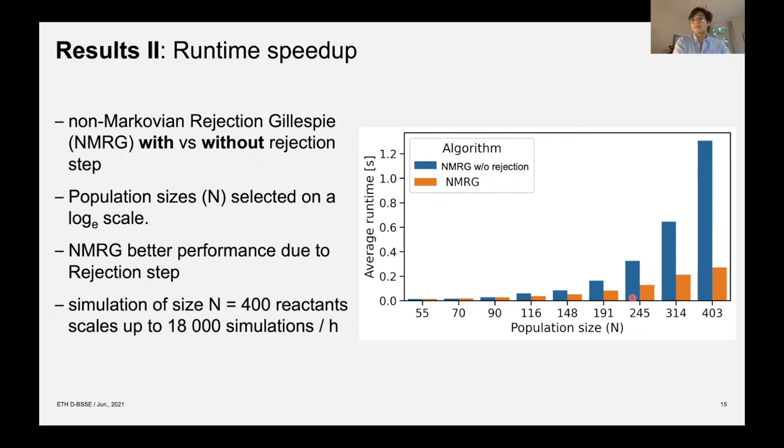So on the figure here, in blue is the approach without the rejection and in orange is the full approach with rejection. And you can see that the rejection approach scales way better with increasing population sizes. And so this is a single simulation run with a population size of about 400. For the rejection Gillespie it takes only about 0.3 seconds whereas for the other method it takes an order of magnitude longer. And hence we can actually with our approach really scale the simulation size of 400 reactants to 18,000 simulations per hour for example. Or conversely you can have a huge starting population size and run many simulation cycles still within a reasonable time.